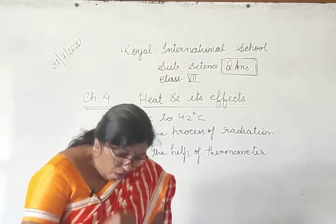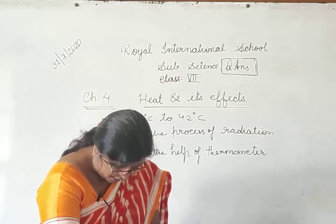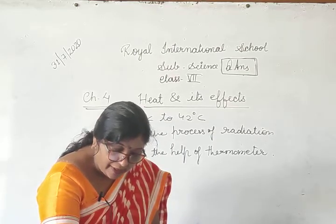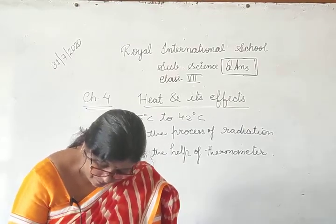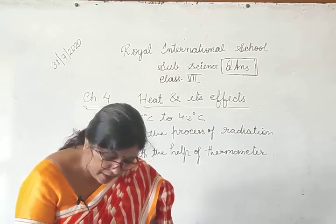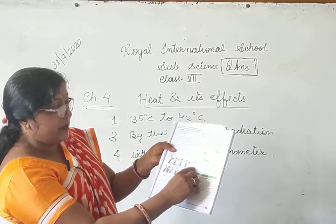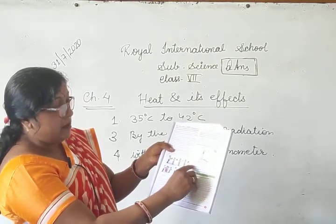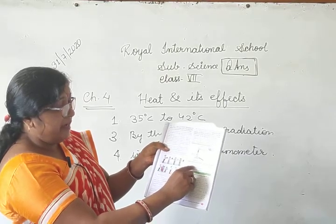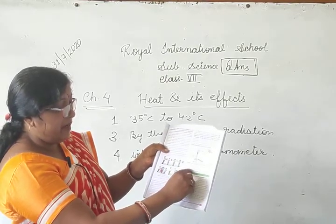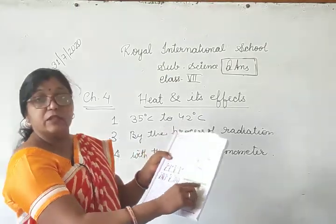Fourth question: what are the two conditions necessary for conduction of heat? Page number 37. Heat can be conducted from one body to another only when they are: number one, in contact with each other, and number two, at different temperatures.